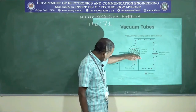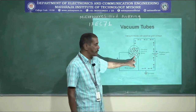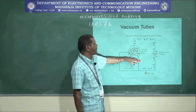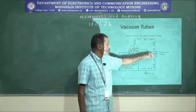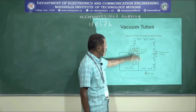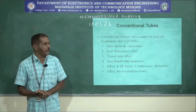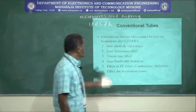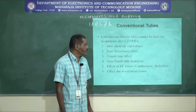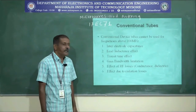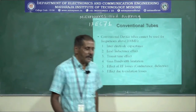In the vacuum tube, when you apply the respective voltages, the filaments get heated and the heat energy is transferred to the cathode. The cathode starts emitting electrons which move to the plate (anode), and the current flow is controlled by the control grid voltage. The drawbacks of conventional vacuum tubes are: internal electrode capacitance, lead inductance effect, transit time effect, gain-bandwidth limitations, effect of RF losses, and radiation losses.